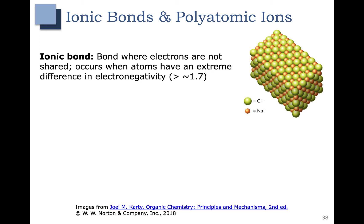Now we're going to talk about ionic bonds. An ionic bond is a bond where electrons are not shared — one atom is essentially stealing all of the electrons. This means atoms have an extreme difference in electronegativity, with a difference of more than 1.7. The best example is sodium chloride, where sodium is very electropositive and chlorine is very electronegative. Sodium chloride should never be drawn as a covalent bond; it should properly be drawn as Na+ and Cl-. The negative and positive charges attract, but this is not a covalent or even a polar covalent bond.